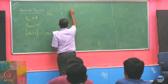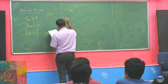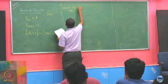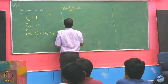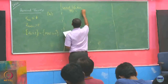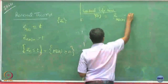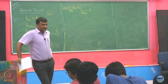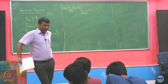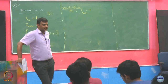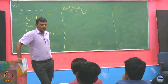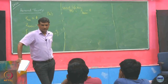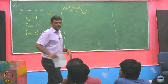Now define another process called residual lifetime. I am going to define a process Y(t) for every t. It is defined as Z_{m(t)+1} minus t. Before we try to understand what this is capturing, let us try to draw how this function looks like.